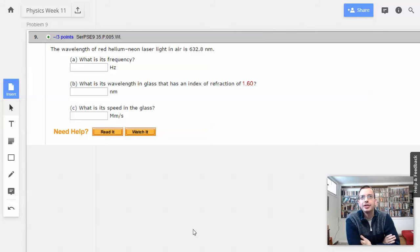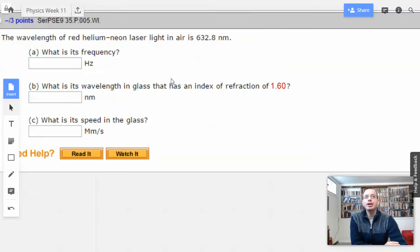Week 11, problem 9. The wavelength of red helium-neon laser light in air is 632.8 nanometers.